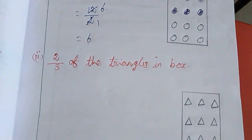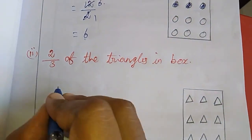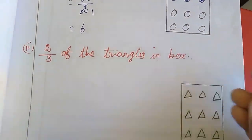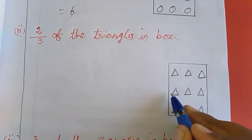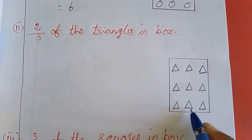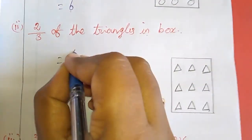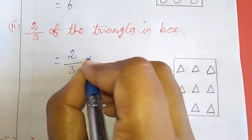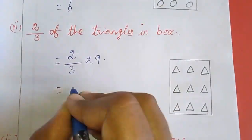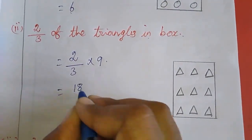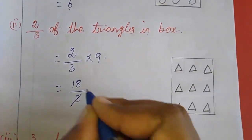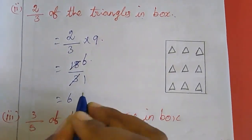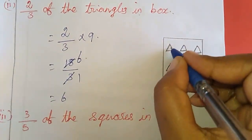Now the second sum. See here: 2 by 3 of the triangles in box. How many triangles are here? 3, 4, 5, 6, 7, 8, 9. So you have to write 2 by 3 into 9. This we can write as 18 by 3. 1×3 is 3, 6×3 is 18. So how many triangles you want to share? 6.